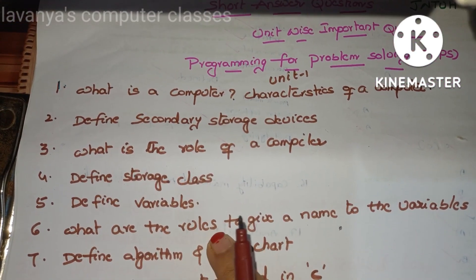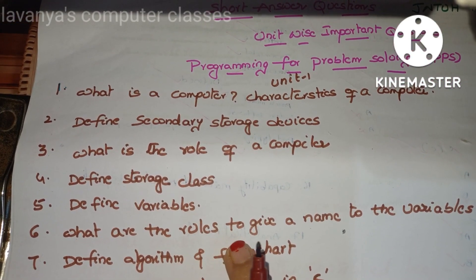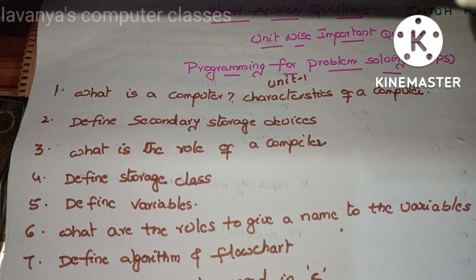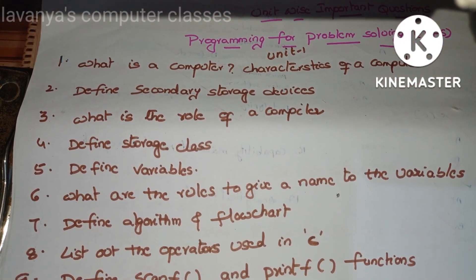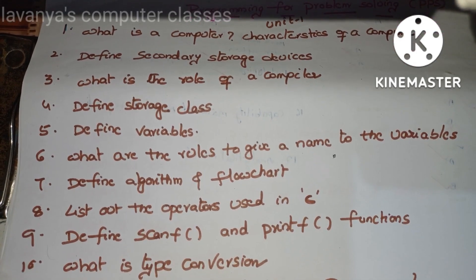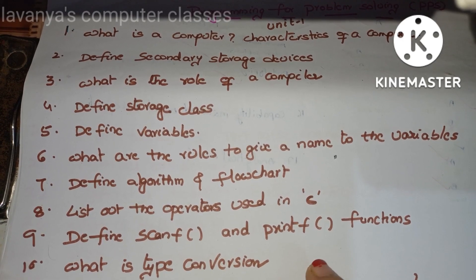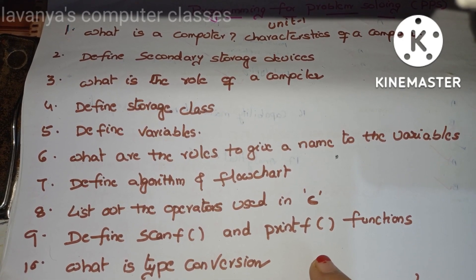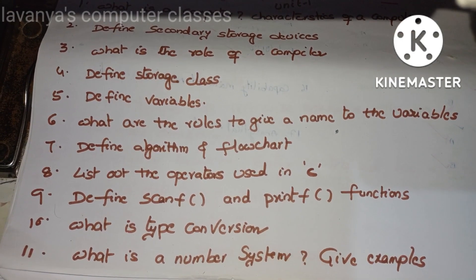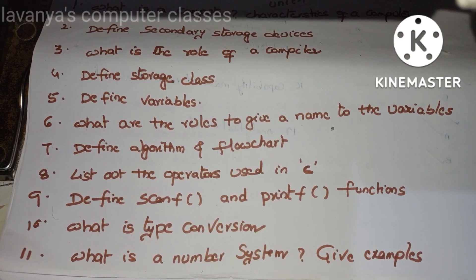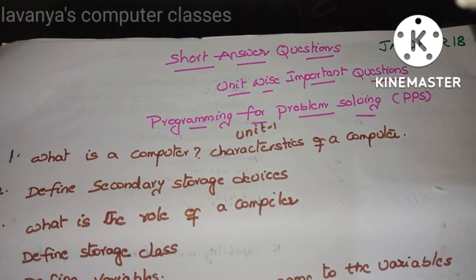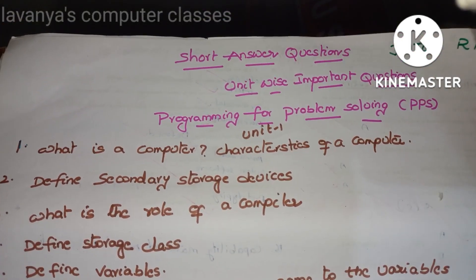Next, what is variable? Define variables and what are the rules to give a name to the variables. Next, define algorithm and flowchart. List out the operators used in C language. Define scanf and printf functions, or sometimes they're asking explain input and output functions also. What is type conversion and what is number system? Give examples, conversions also. These are some important questions in Unit 1.